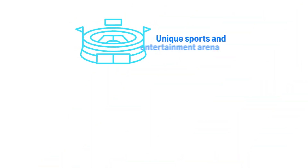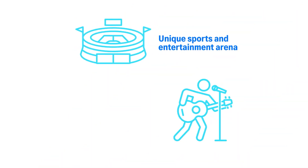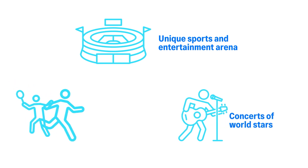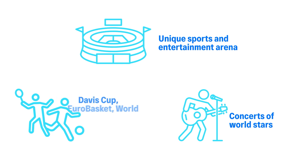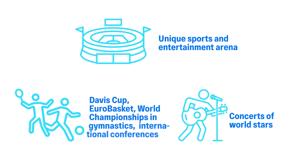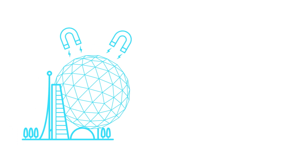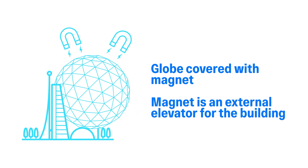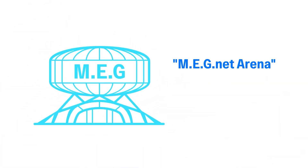Construction of a unique sports and entertainment arena. It will be able to host concerts and show programs of world stars, sports events of planetary scale such as the Davis Cup, Eurobasket, world championships in gymnastics, hockey, and others, as well as large-scale international conferences. The building will be constructed in the form of a globe covered with a magnet, symbolizing the attraction of the most notable world-scale events. The magnet will function as an external elevator for the building. The complex will be called Magnet Arena — the abbreviation MEG standing for Multi-Efficient Global.